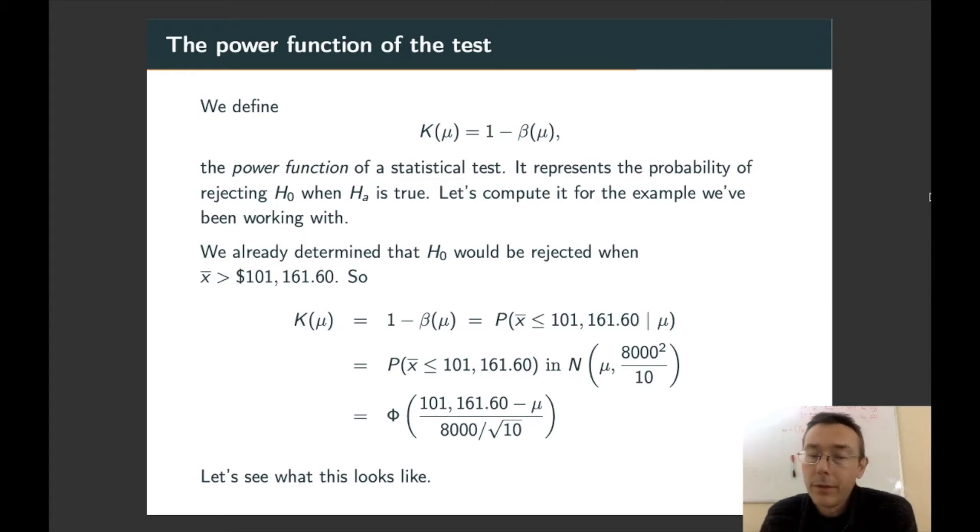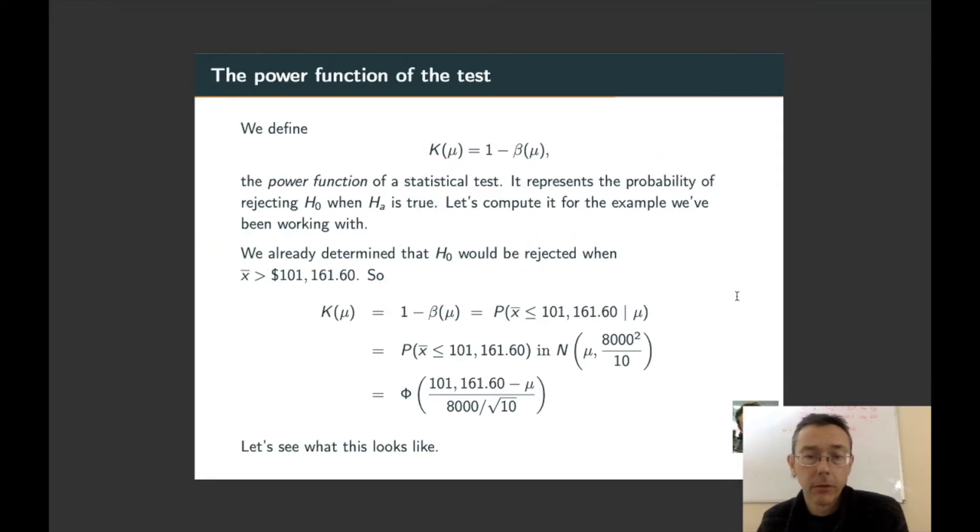So the inequality stays the same as we look in the second line. What changes is the normal distribution we're actually in. It's getting shifted to one side or another. And so we get K of mu is this normal CDF function where the population mean mu is actually on the inside. So let's actually see a picture of what this K of mu might look like in this situation.